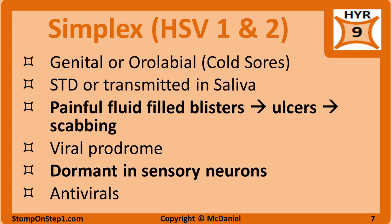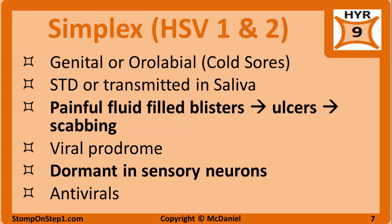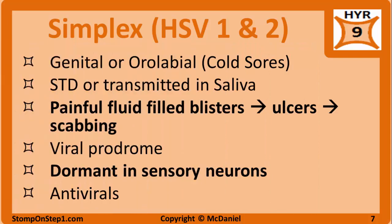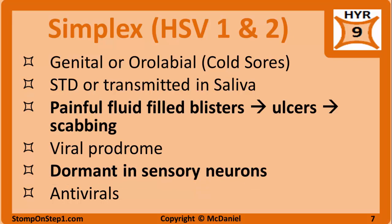In both cases herpes simplex can be asymptomatic or cause painful fluid-filled blisters on the skin and mucous membranes that can progress to ulcerations. Genital herpes typically has multiple lesions, while oral labial herpes most commonly has a single lesion. There may also be nonspecific symptoms before the lesions occur called a viral prodrome, which can include fever, malaise, and tingling in the area that later shows the lesions. HSV1 and HSV2 are lifelong infections with asymptomatic periods where the virus lays dormant in sensory neurons. The virus mostly lays dormant in the trigeminal ganglia after oral labial herpes, while genital herpes usually results in the virus laying dormant in the sacral ganglia. There is currently no cure for the virus.